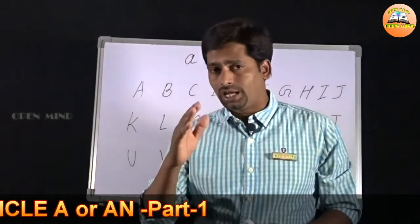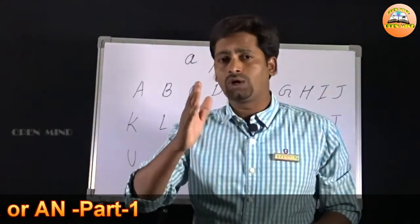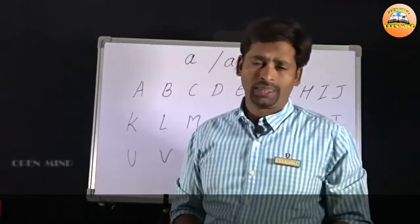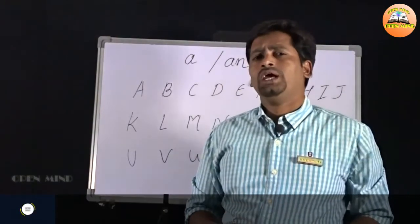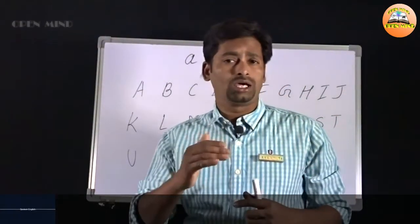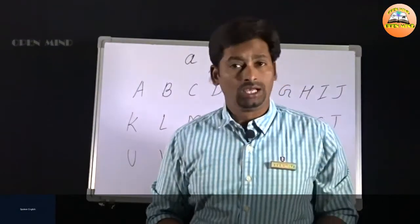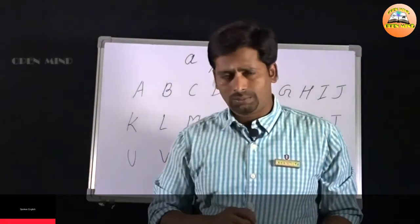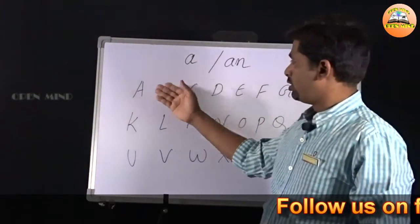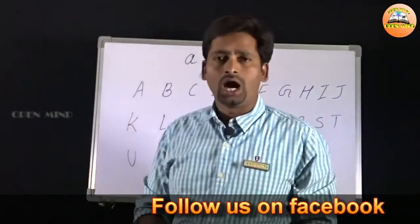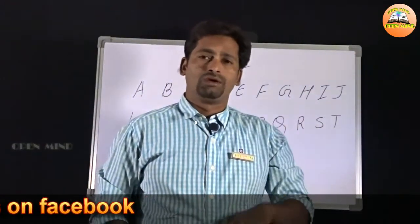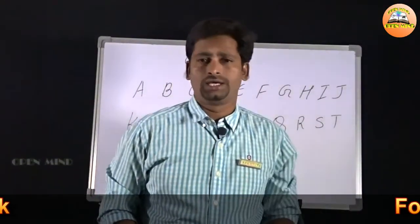आज हम articles में A और AN इस concept को समझने की कोशिश करेंगे। यह बहुत आसान है। हिंदी भाषा में वर्णमाला में स्वर और व्यंजन अलग-अलग से लिखे हुए हैं, लेकिन English भाषा में अक्षर भी कम हैं और alphabet में अक्षर स्वर और व्यंजन में विभाजित नहीं किया गया है।